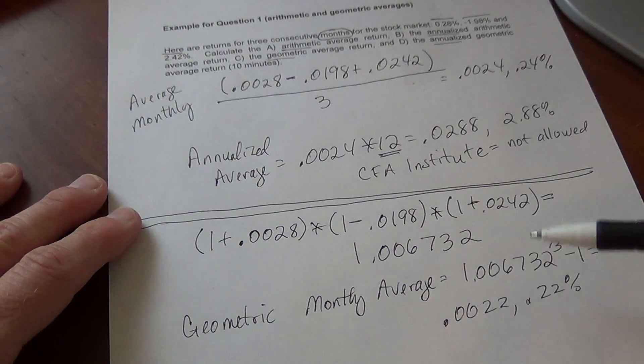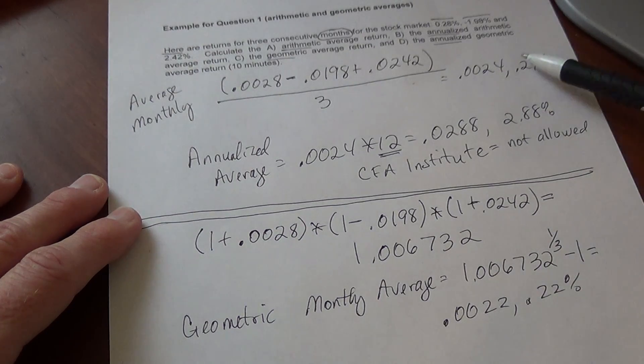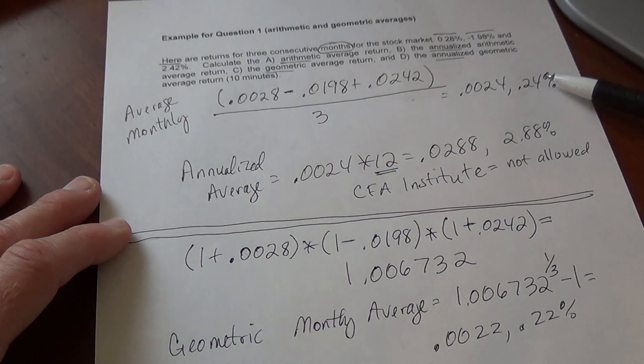For the monthly average, the geometric will always be equal to or less than the arithmetic. In this case, the arithmetic was 0.24%, geometric was 0.22%, so that makes sense.